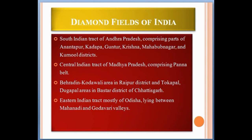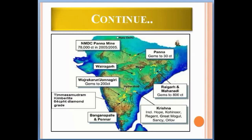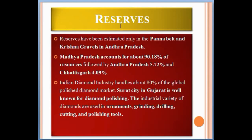As seen on the map, this is the Panna belt, this is the Chhattisgarh area, and this is the Andhra Pradesh area. Resources have been estimated only in the Panna belt and Krishna gravels in Andhra Pradesh. Madhya Pradesh accounts for about 90.18 percent of resources, followed by Andhra Pradesh at 5.72 percent, and Chhattisgarh at 4.09 percent of diamond deposits.